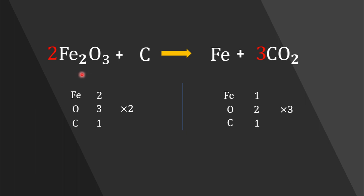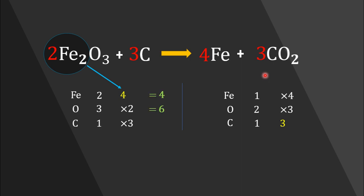To balance iron, we can add coefficient four in front of iron in the product side. Now iron and oxygen atoms in our equation are balanced. However, there is still one carbon atom in our reactant side, while there are three carbon atoms in the product side. So we simply add three in front of carbon in the reactant side to balance our equation. Now our equation is totally balanced — there are four iron atoms, six oxygen atoms, and three carbon atoms on each side.